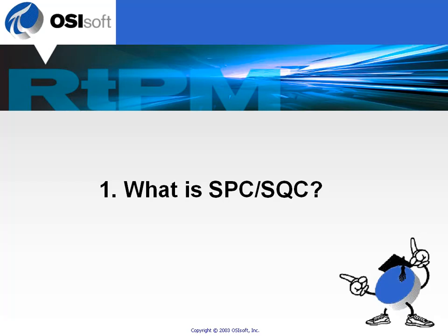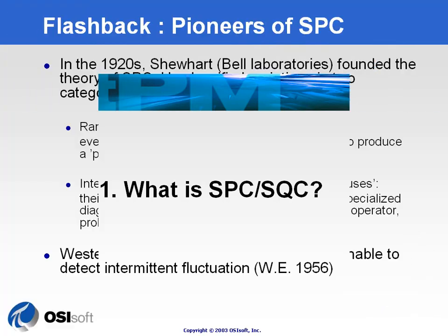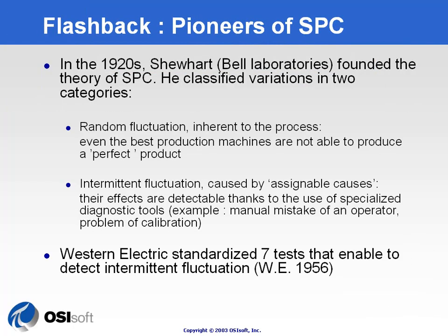Let's start with the origin and a clear definition of what is SPC, Statistical Process Control, and SQC, Statistical Quality Control. It goes back to the 1920s when Walter Shewhart, working for Bell, was observing a lot of variability in the process of building parts for the phone system.